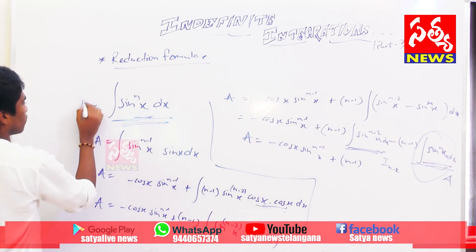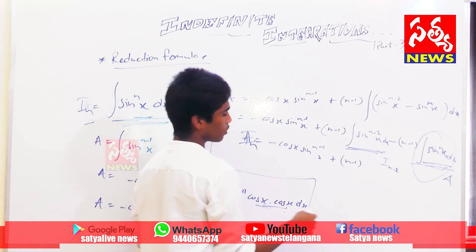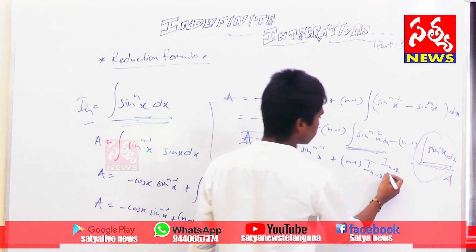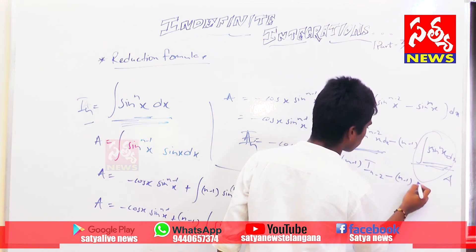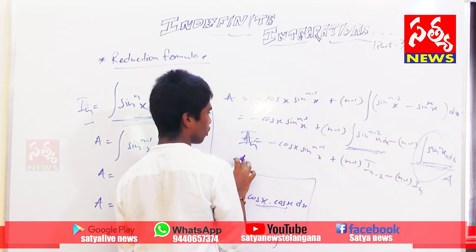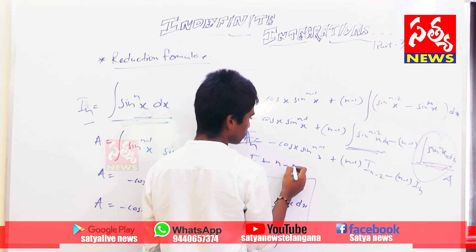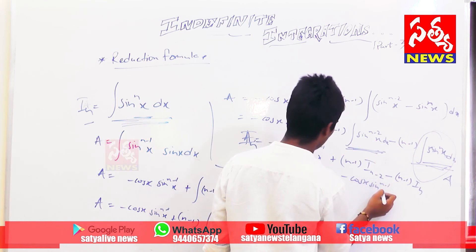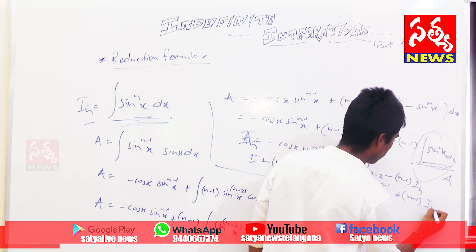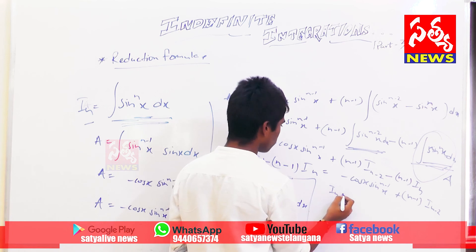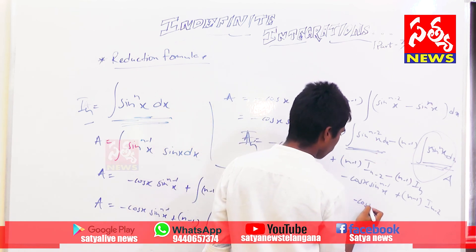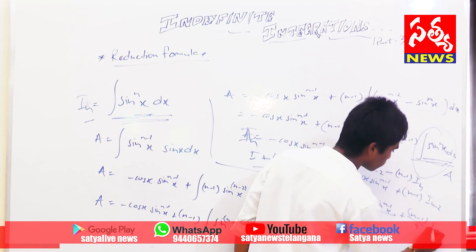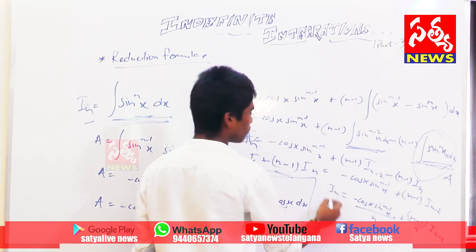So I_n equals minus cos x · sin^(n-1)(x) plus (n-1)·I_(n-2) minus (n-1)·I_n. Taking the I_n term to the left side: I_n + (n-1)·I_n equals minus cos x · sin^(n-1)(x) plus (n-1)·I_(n-2). Solving: n·I_n equals minus cos x · sin^(n-1)(x) plus (n-1)·I_(n-2). Therefore, I_n equals minus cos x · sin^(n-1)(x) / n plus [(n-1)/n] · I_(n-2). This is the reduction formula.